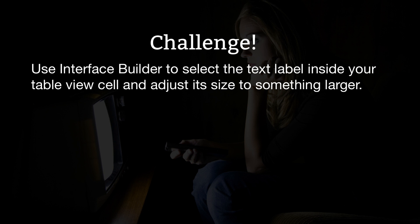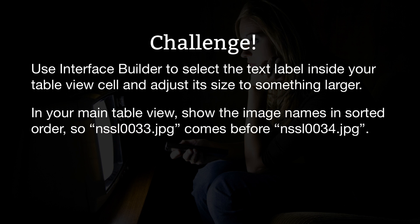Second, in your main TableView, show the image names in sorted order, so NSSL0033.jpg comes before NSSL0034.jpg.